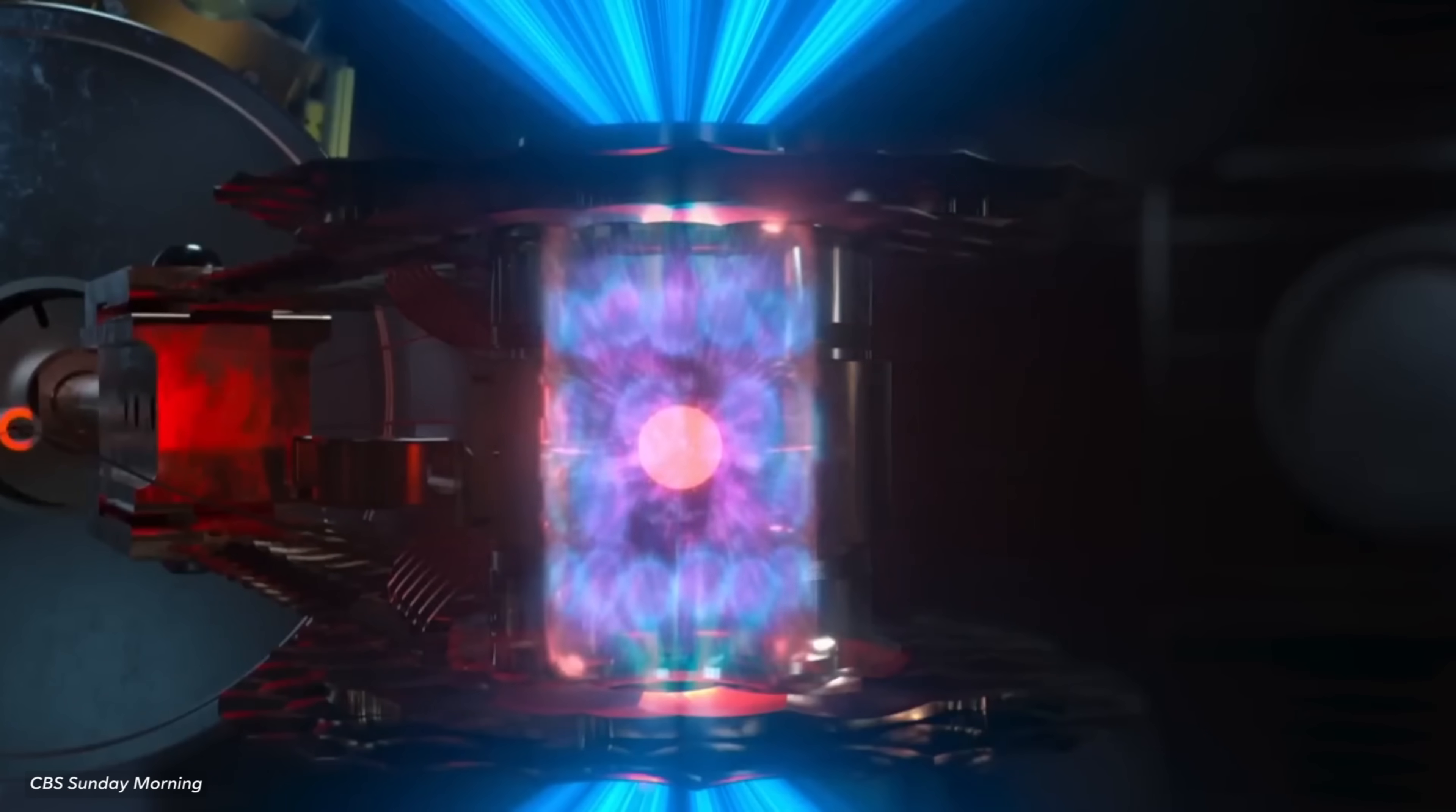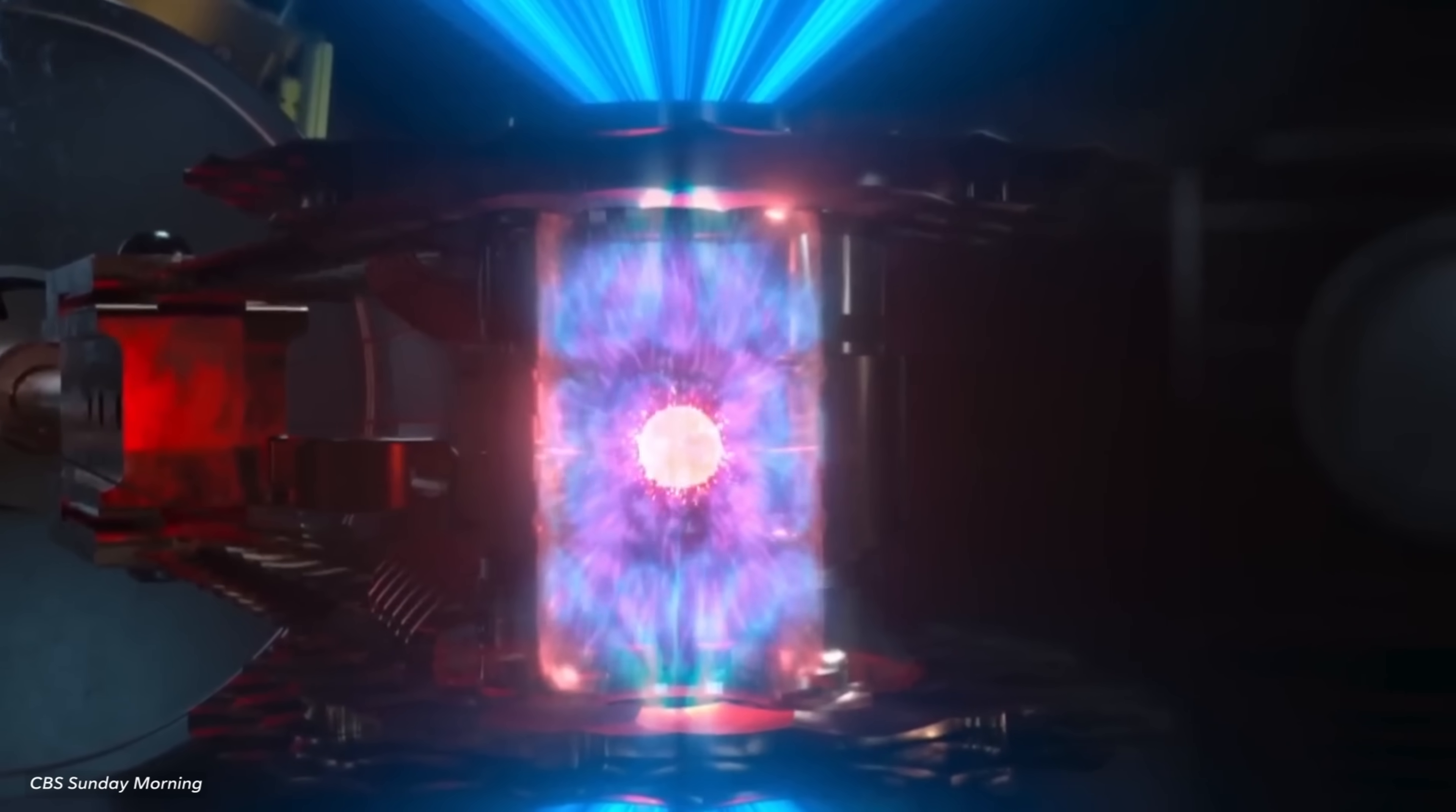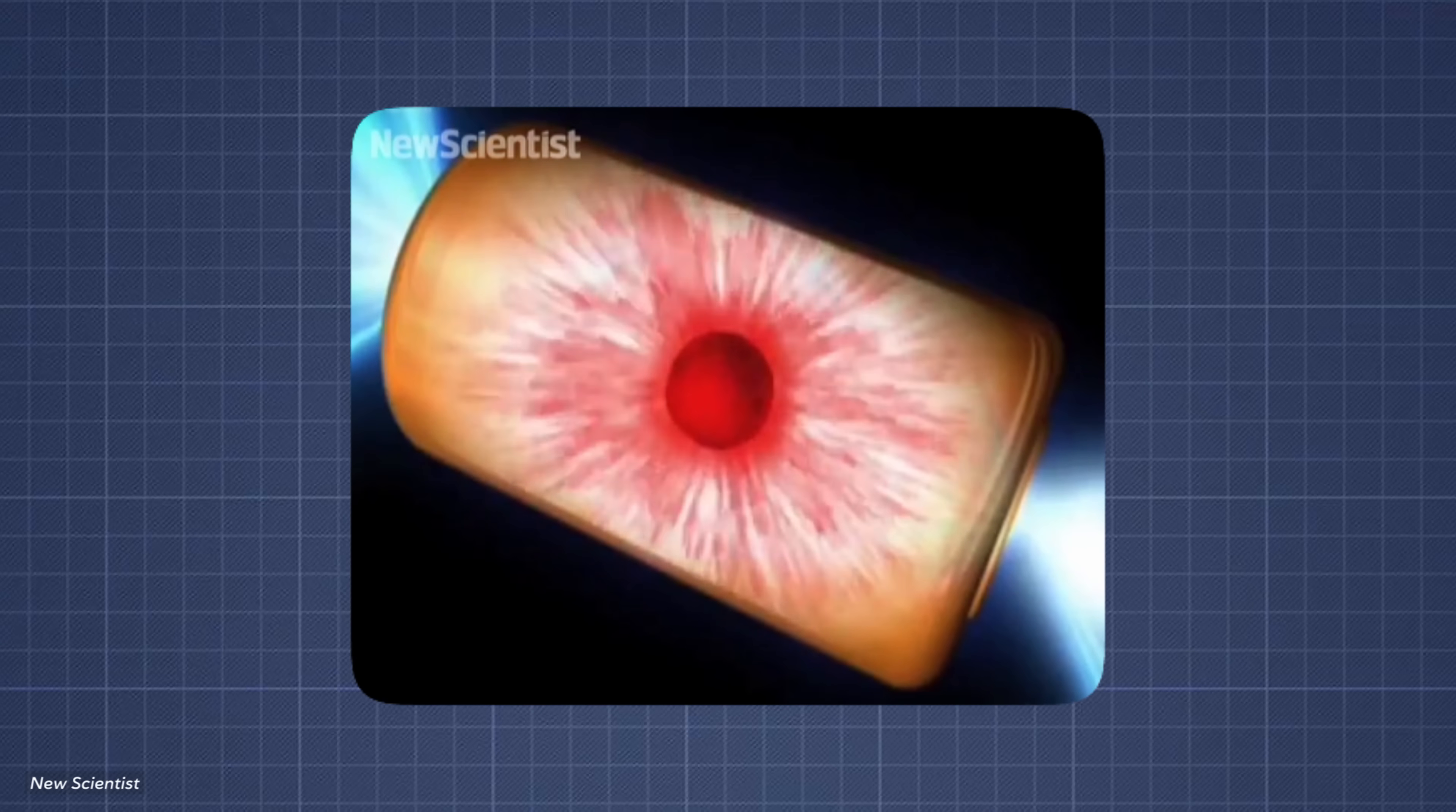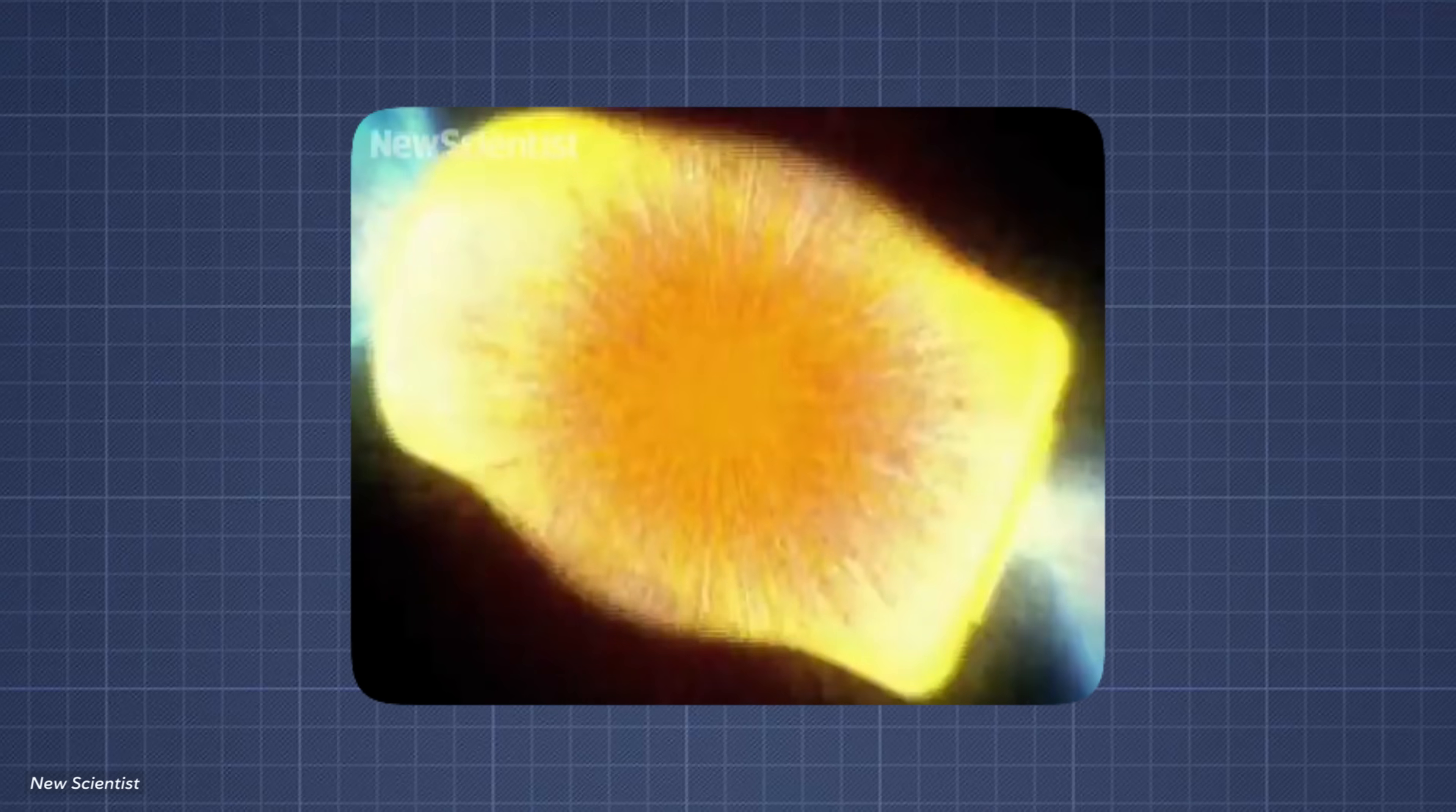Dozens or even hundreds of high-powered lasers are fired at the capsule all at once. The heat and pressure cause the outer layer to explode outward, which forces the inner layer to implode. That implosion creates the insane temperatures and pressure needed for fusion to start.